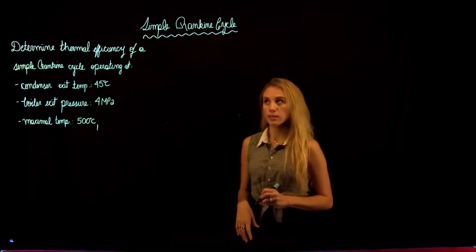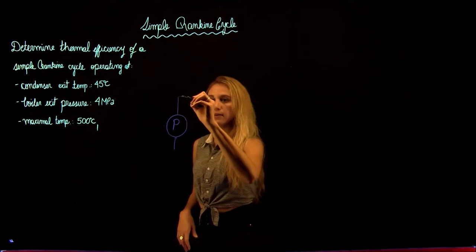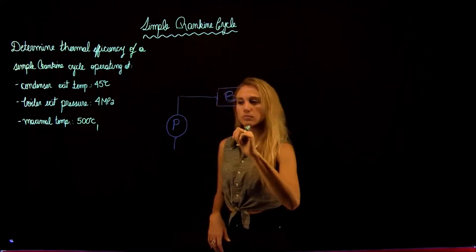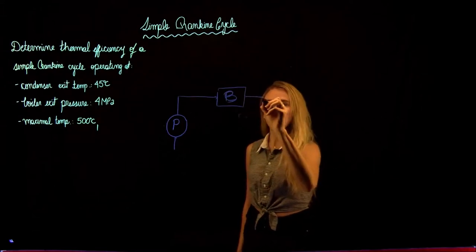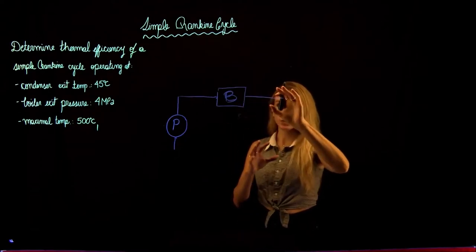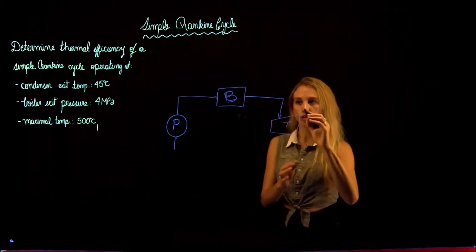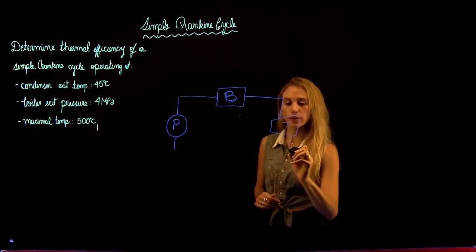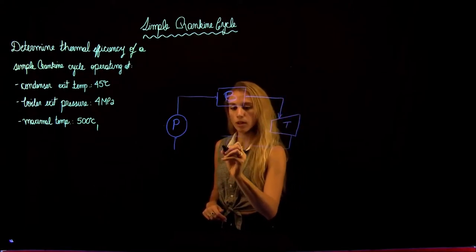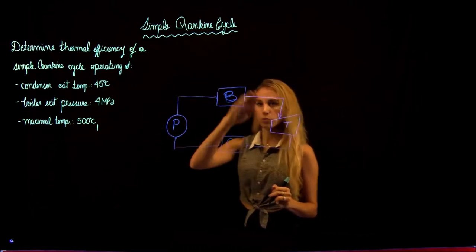Let's start by drawing the Rankine cycle. We have liquid entering the pump, and it's going to leave as a compressed fluid in order to enter a boiler. In the boiler, the compressed fluid is going to be heated up in order to have a phase change. When the fluid exits the boiler, we're going to have the fluid in a vapor state, so we're going to have steam entering the turbine. In the turbine, we're going to have an expansion of the fluid, which is going to create a work output. The steam exiting the turbine is going to go to the condenser, where the fluid is going to be converted from vapor to liquid in order to go through the process again.